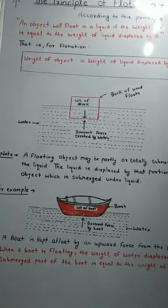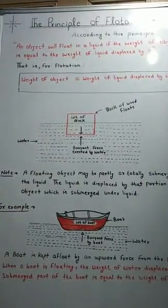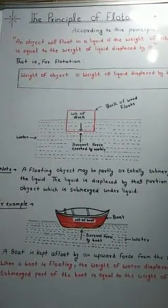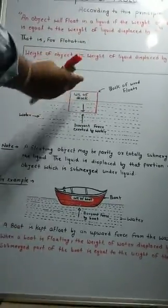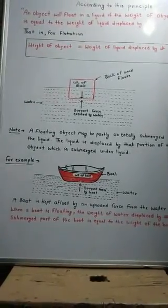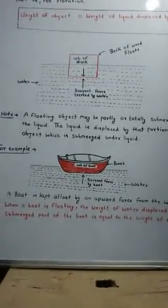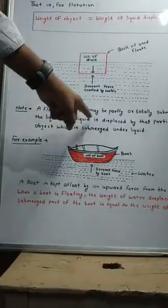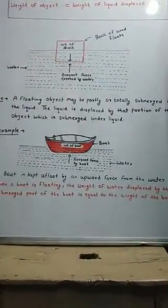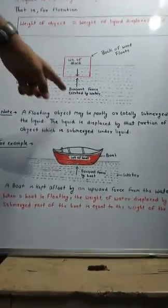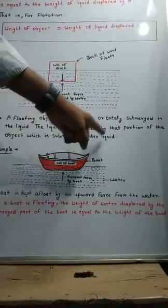If I talk about the object, we can say that it can fully float or partially float — some part is inside the liquid and some part is outside. If you look at the object partially floating, the liquid is displaced by that portion of the object which is submerged under the liquid.